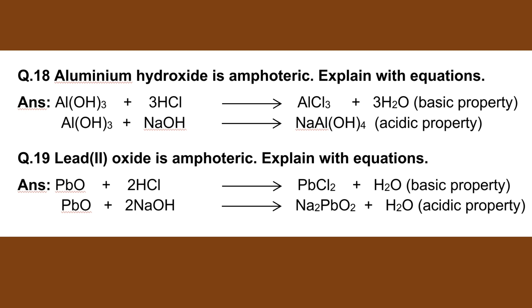Number 18. Aluminium hydroxide is amphoteric — explain with equations. Al(OH)3 plus 3HCl gives AlCl3 plus H2O (acidic property). Al(OH)3 plus NaOH gives NaAl(OH)4 (basic property).